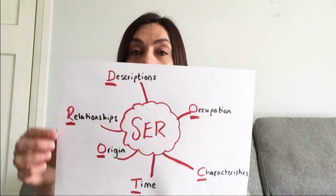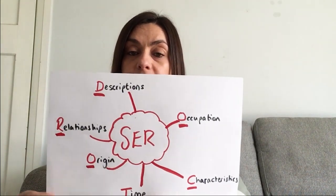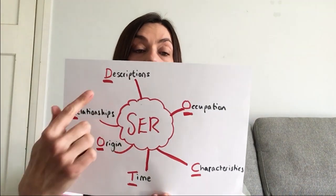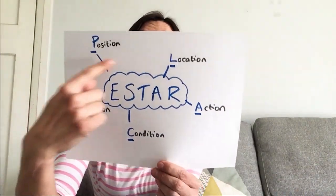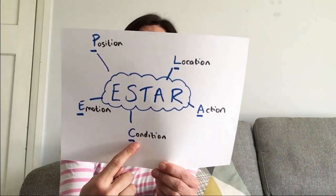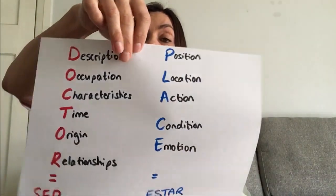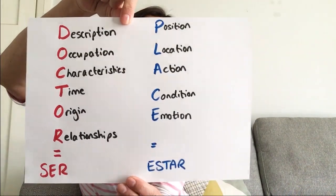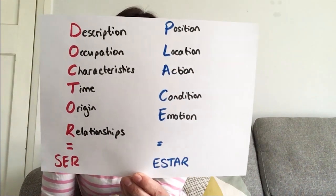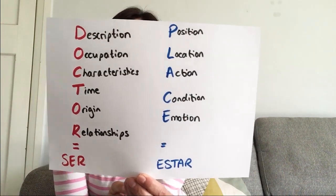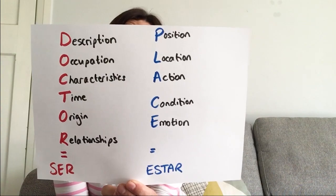So as you can see when we went through the meanings, there are some mnemonics that will hopefully allow you to remember these a little bit better. For ser, you've got DOCTOR: Description, Occupation, Characteristics, Time, Origin, Relationships. And then for estar, you've got PLACE: Position, Location, Action, Condition, and Emotion. Mnemonics are really good ways of helping your brain remember something more easily, and those two — DOCTOR and PLACE — will serve you for most uses of ser and estar up to a certain level.